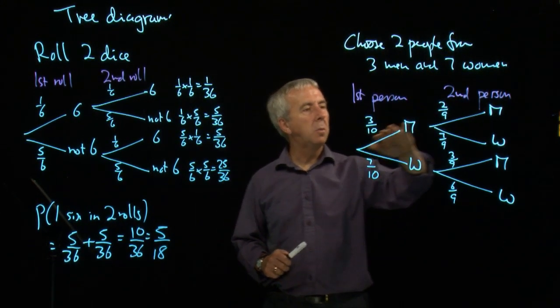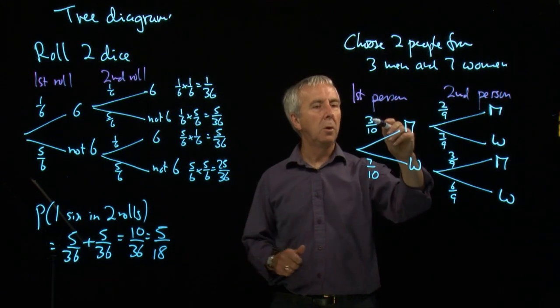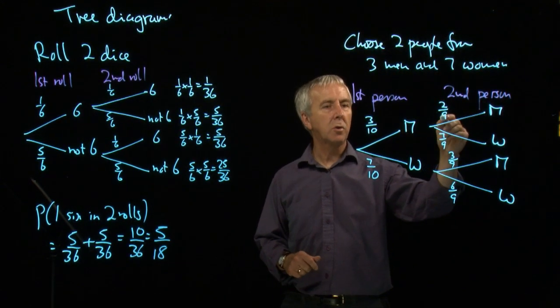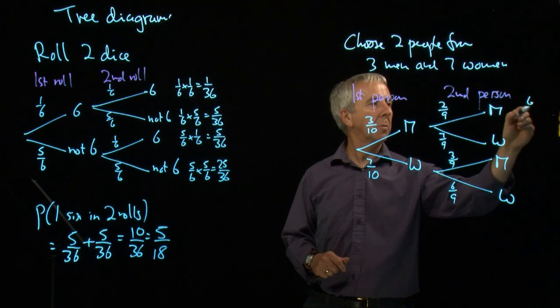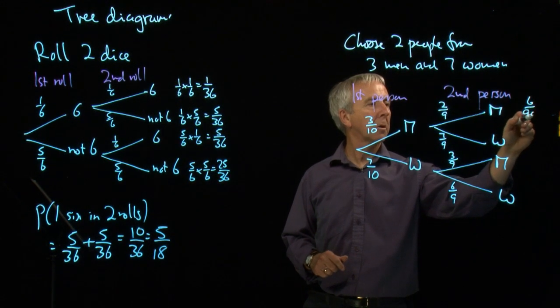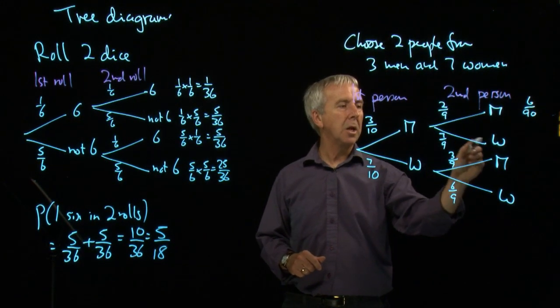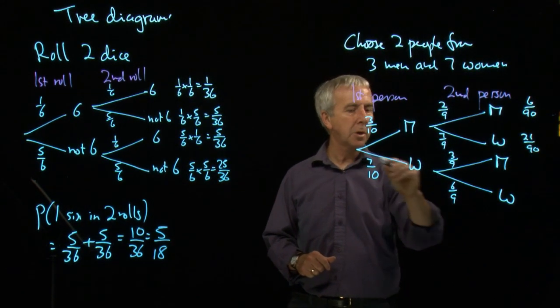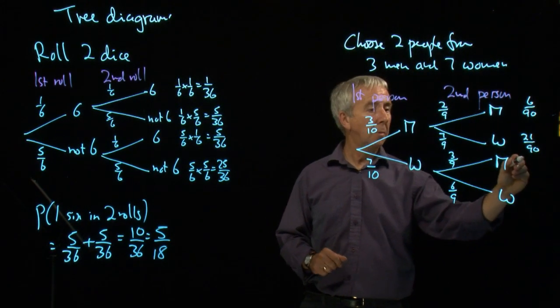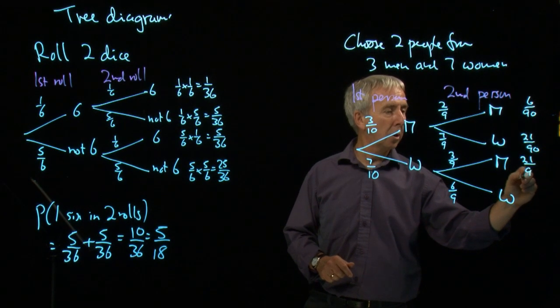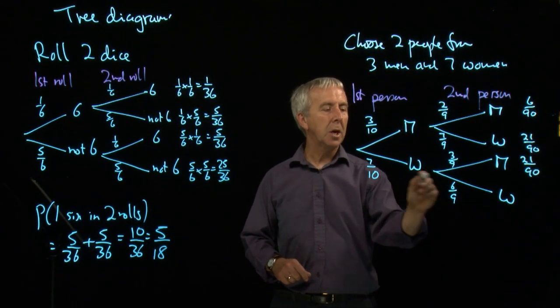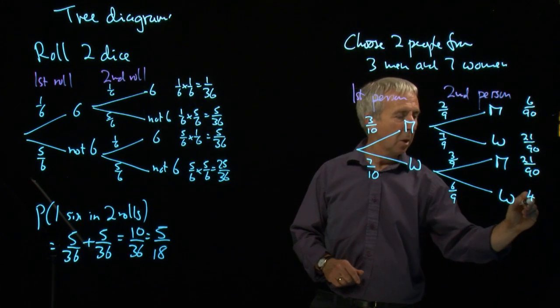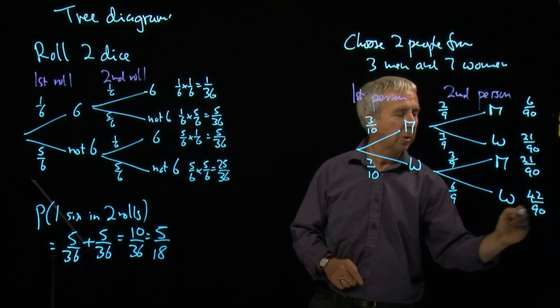If we now multiply along our branches like we did before, we get three-tenths times two-ninths, which is going to be six-ninetyths. And then we get three-tenths times seven-ninths, which is twenty-one-ninetyths. And then seven-tenths times three-ninths, also twenty-one-ninetyths. And then seven-tenths times six-ninths, which is forty-two-ninetyths.